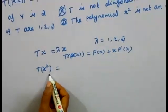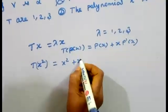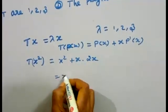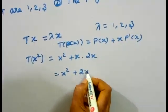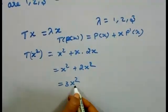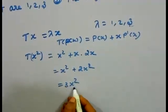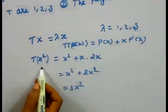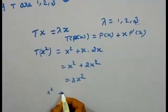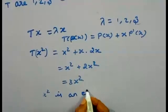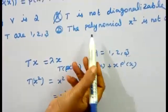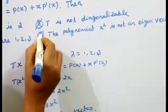Computing T(x²): p(x) = x², p'(x) = 2x, so T(x²) = x² + x·(2x) = x² + 2x² = 3x². This equals 3·x², so T(x²) = λ·x² with λ = 3. Therefore x² is an eigenvector. The fourth option — that x² is not an eigenvector — is wrong.